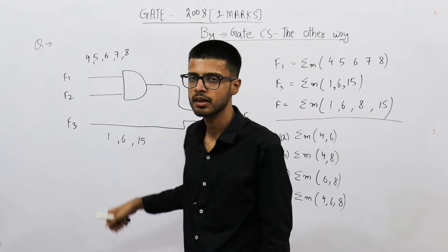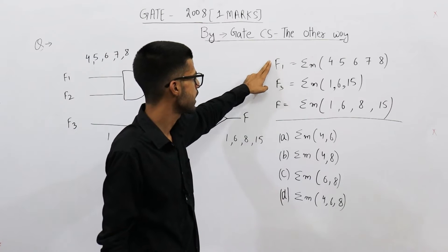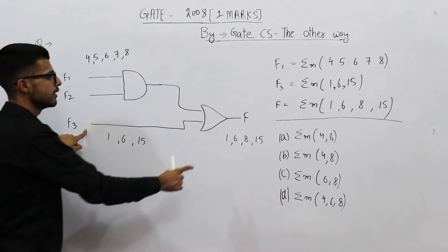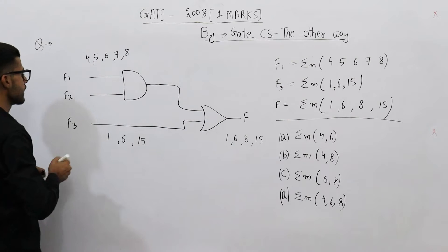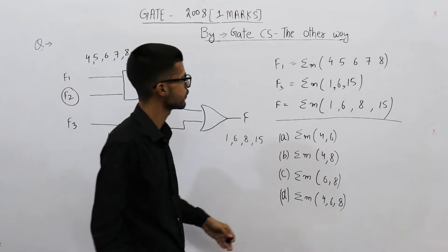They have given you this circuit, and they have given the definitions of function f1, f3, and f. This is f1, this is f3, this is f. We need to find out what is f2. Also they have given you these four options.